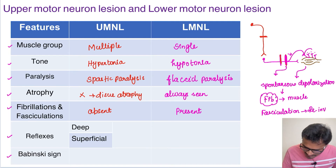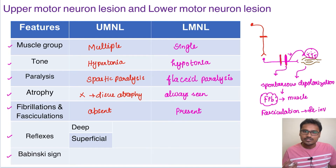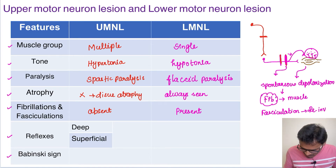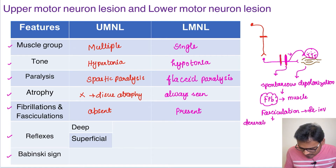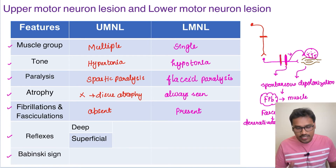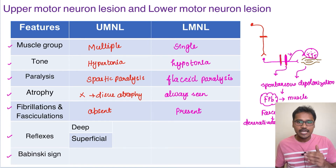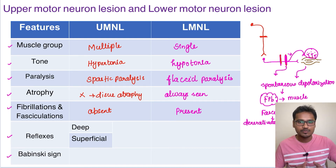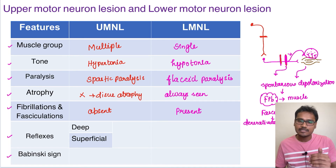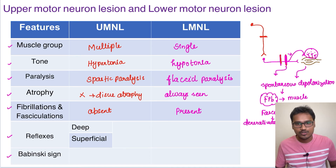The increase in number of receptors also causes increased sensitivity, further increasing fasciculation. This is called denervation hypersensitivity — because of denervation, there is hypersensitivity happening. Fasciculation can be seen with the naked eye in all groups of muscles, whereas fibrillation is usually recorded by EMG, except in the tongue where it can also be seen.